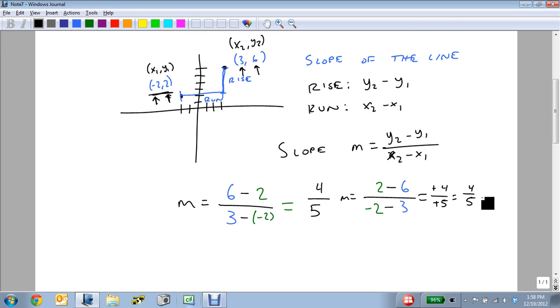So it doesn't matter which one we put first, or which one we put second. It just matters that we keep them the same, and that we put the y's on top and the x's on bottom. But our slope, regardless of which way we do it, is 4 over 5.